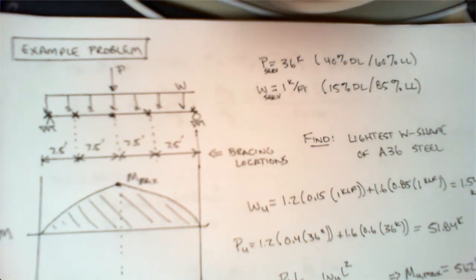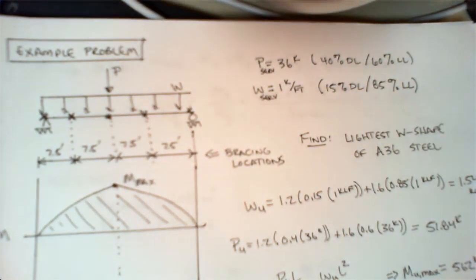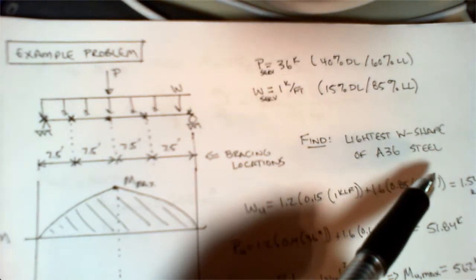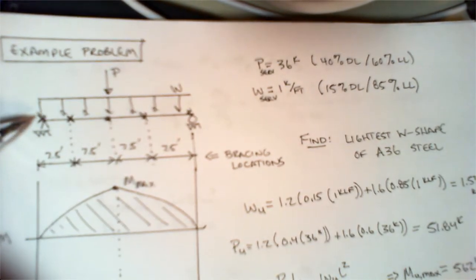Alright, welcome back. This example will be our first design example for the bending of compact shapes, including our lateral torsional buckling calculation. We're being asked to find the lightest W shape of A36 steel that satisfies this problem. We have a simply supported beam with a distributed load.